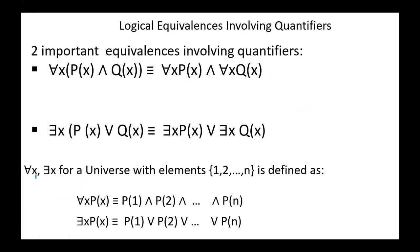For a universe with elements 1, 2, etc., it is defined as: for all x, P(x) is equivalent to P(1) conjunction P(2) conjunction, etc., conjunction P(n). Exists x, P(x) is equivalent to P(1) disjunction P(2) disjunction, etc., disjunction P(n).